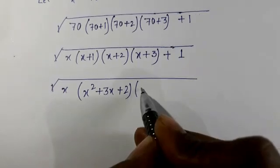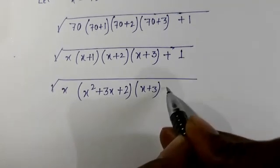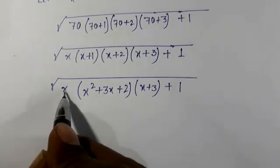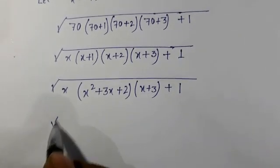And (x+3) plus 1. Once again I am multiplying x with here, so it is √(x(x²+3x+2)(x+3) + 1).